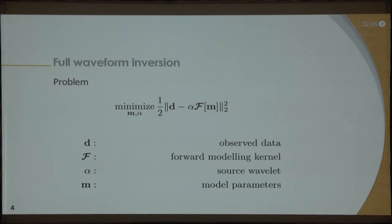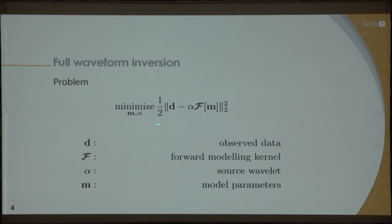We've seen this formulation written in a different way here. This is basically the problem of full waveform inversion, where the objective is to find model parameters characterized by M, or in some cases the source wavelet, given that you have the observed data and a computer code that gives you synthetic data from your starting model. This is a problem you try to solve in full waveform inversion in a least squares sense.